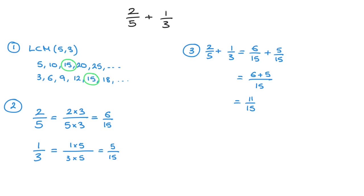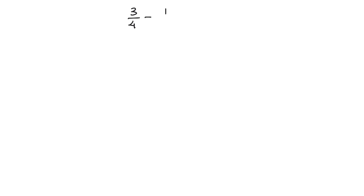Now the good news is this method works as soon as we have to add any two fractions, and it also works when we have to subtract one fraction from another. So let's say we have to calculate 3 over 4 minus 1 over 5. Well again, we follow our three-step method.